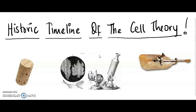Breakthroughs in science go hand in hand with advancements in technology. So it seems like a no-brainer that the cell theory — the idea that all living things are composed of self-sufficient cells — resulted directly from major advancements in the field of microscopy. In this video, I'll be going through the historic timeline of the establishment of the modern cell theory.